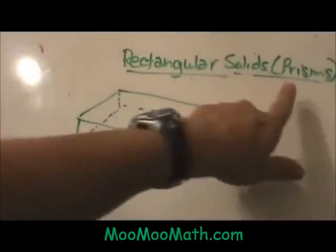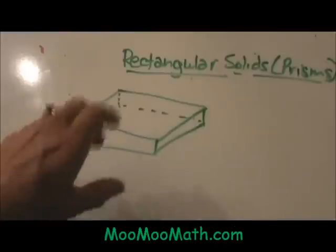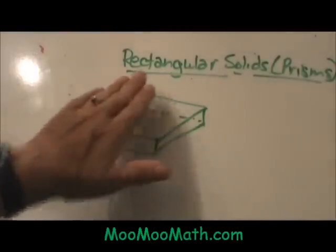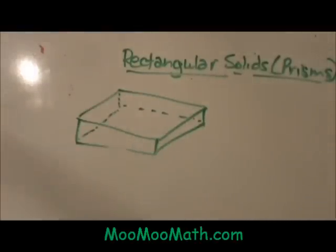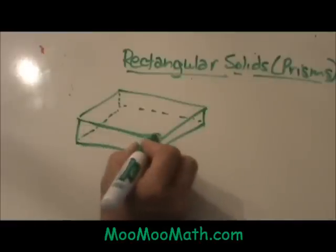Another name for that would be a rectangular prism. Remember that prisms are three-dimensional figures that have parallel bases. This one has a parallel base to the bottom even though this is not a perfect rendition but you get the idea of my artistry here.